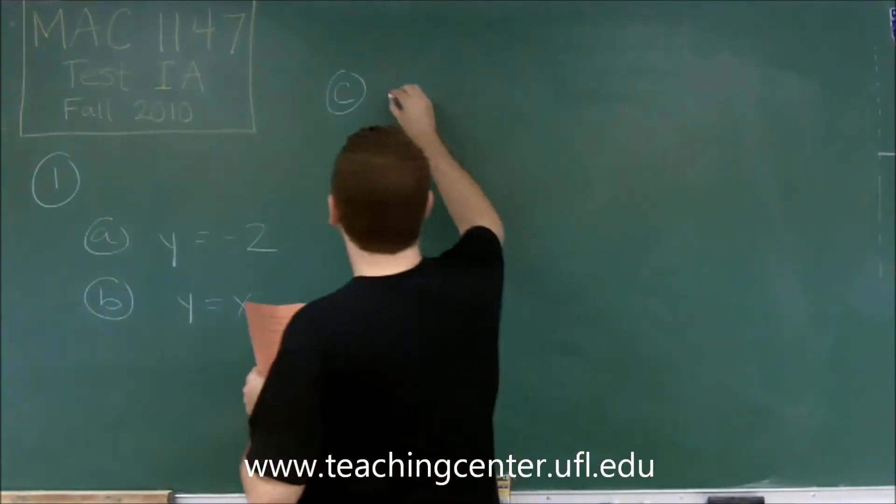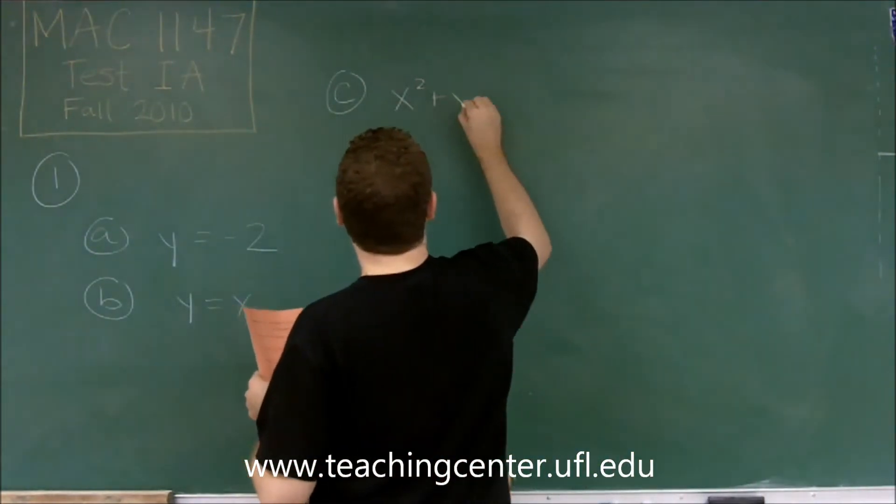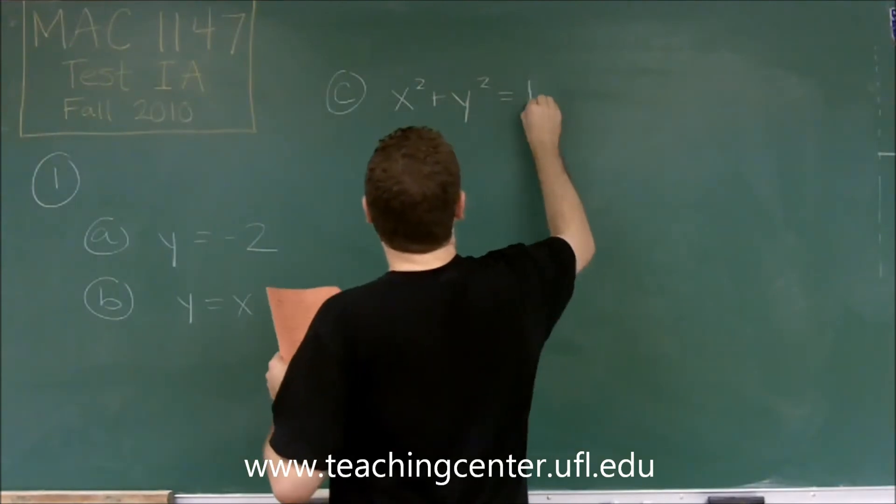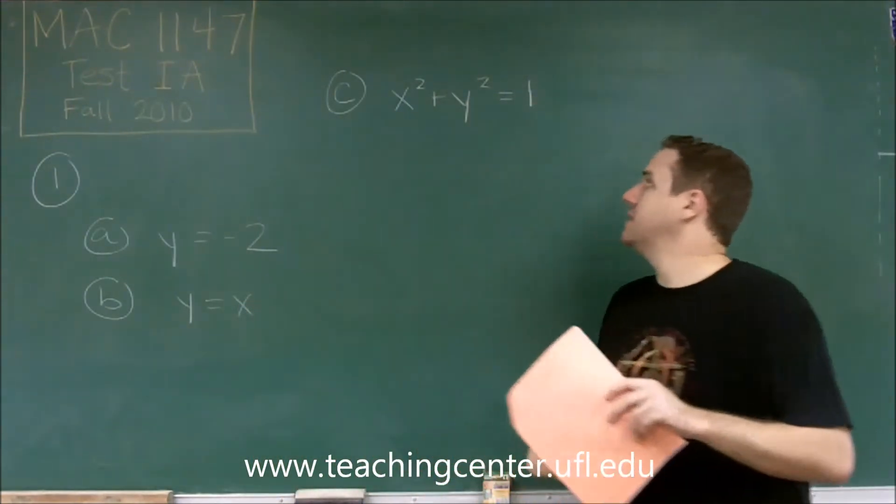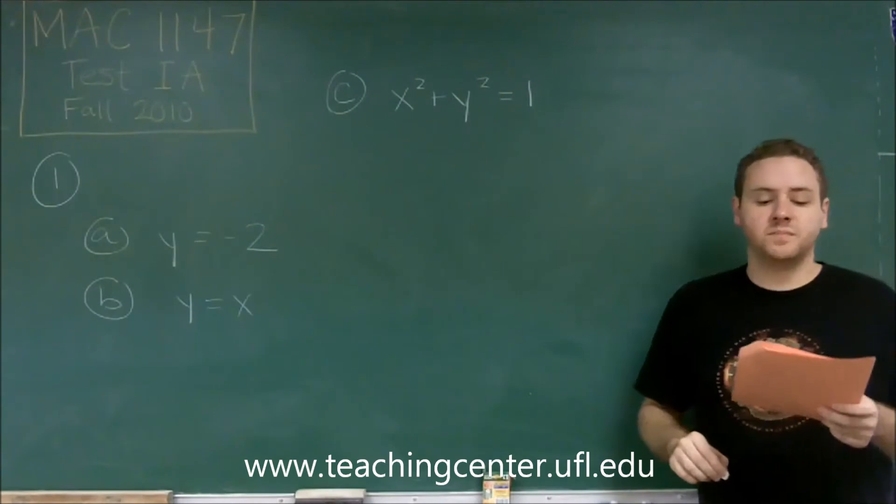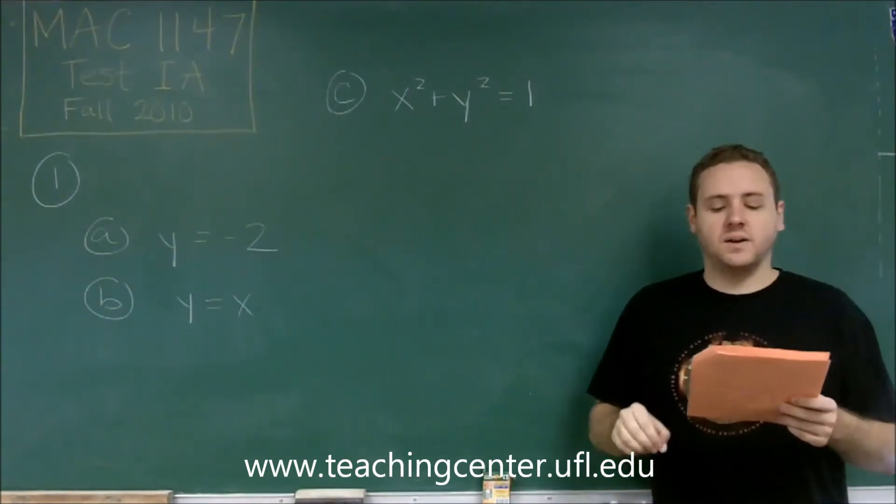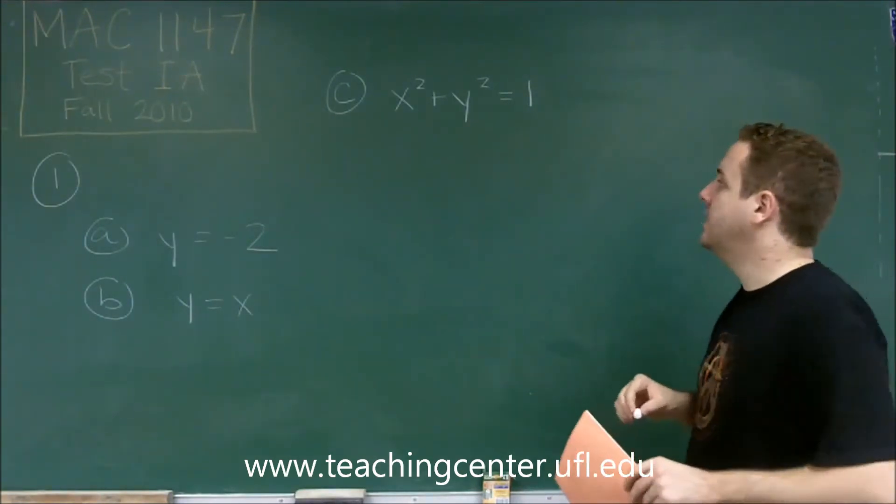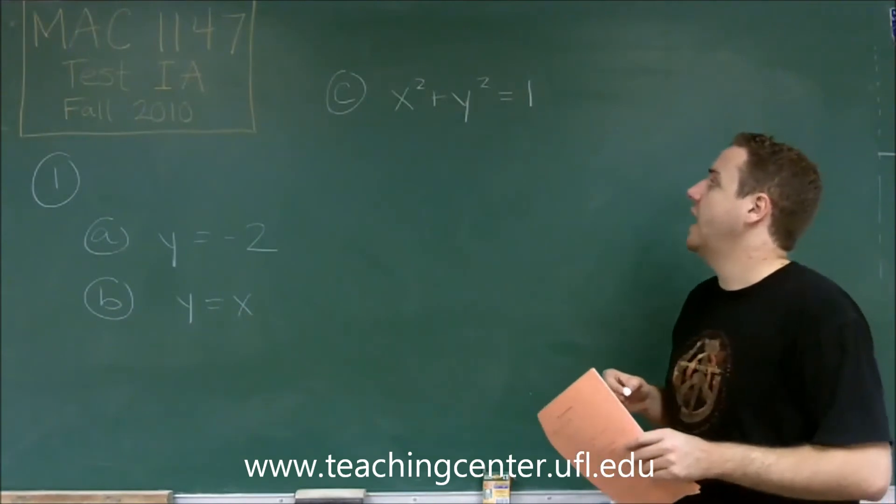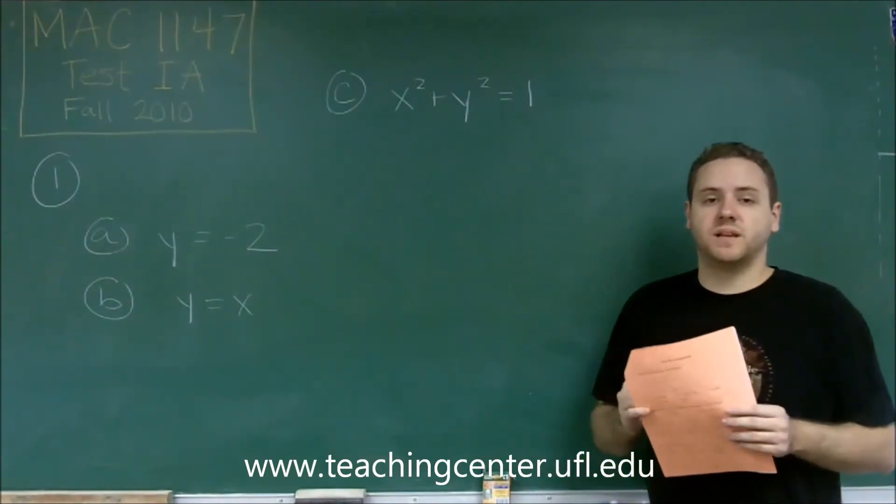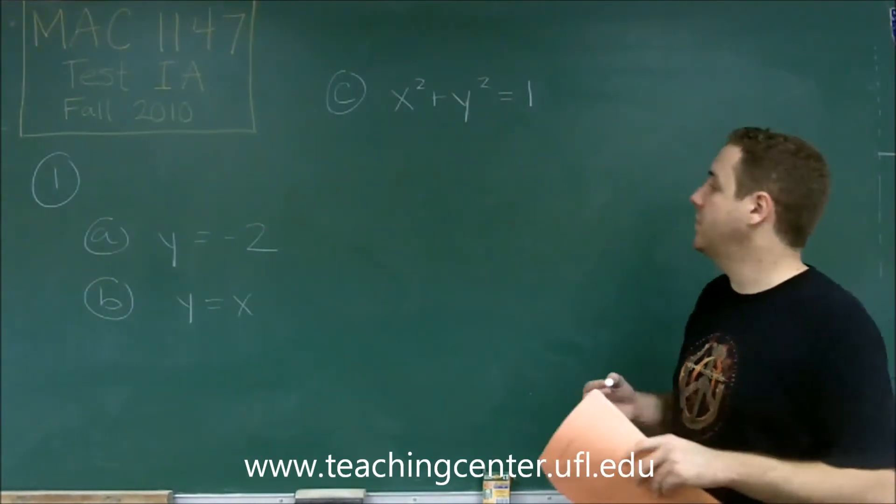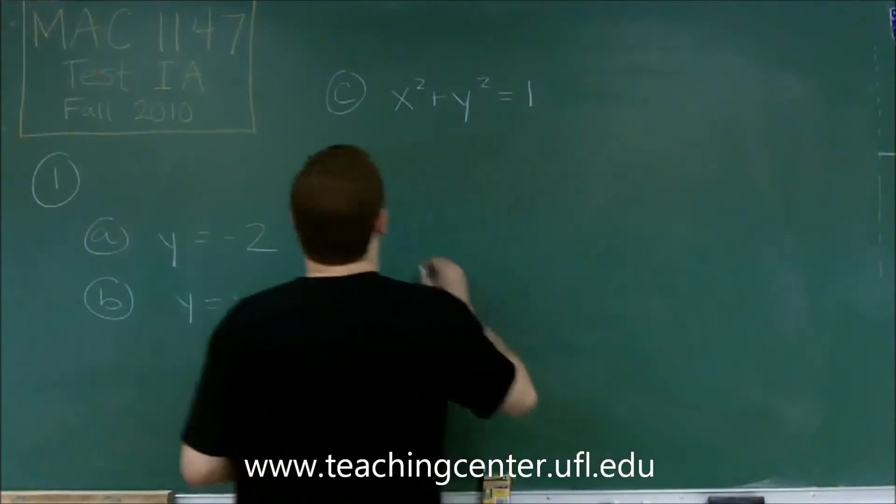For letter C, we have x squared plus y squared equals 1. That's the equation of a circle. This one is not going to be a function of x, because it's possible to have multiple y values for the same x value. Clear example here, let's just choose x equals 0.